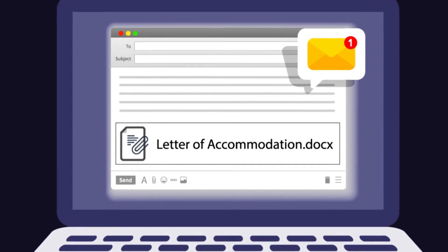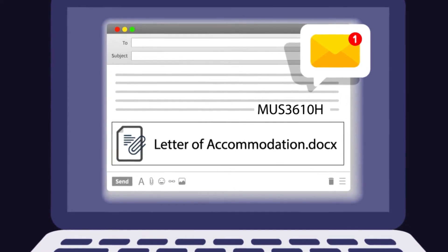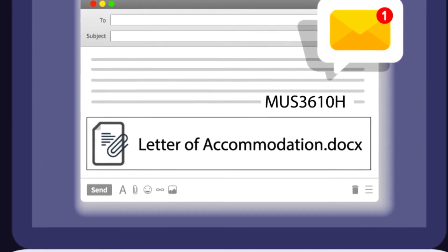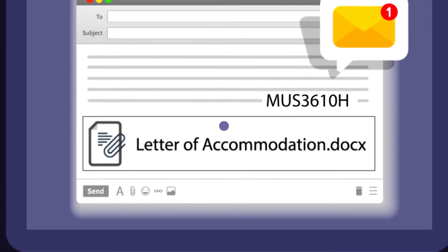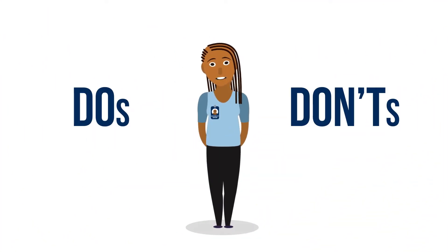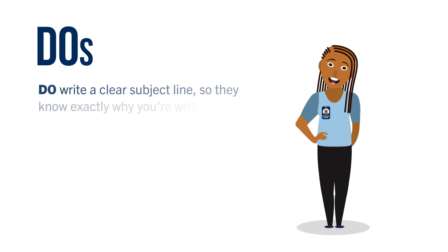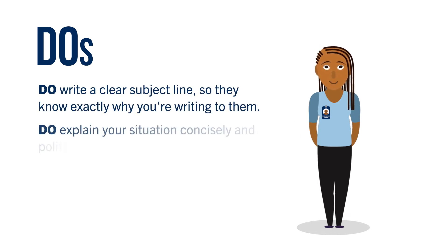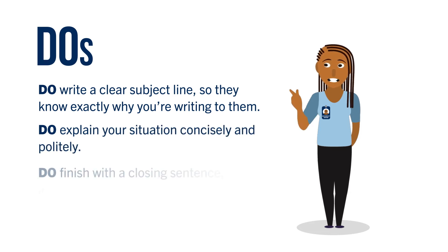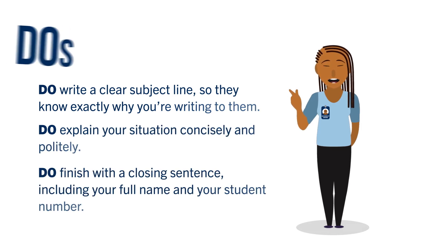Every time you communicate with your instructors, include your course code and section so they know exactly what class you're in — they probably teach a few. Here are a few do's and don'ts for emailing your profs. Do write a clear subject line so they know exactly why you're writing to them. Do explain your situation concisely and politely. Do finish with a closing sentence, including your full name and your student number.